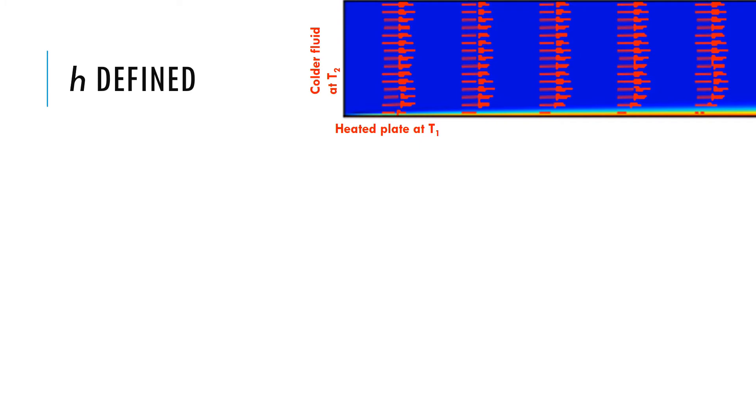So in this slide, we're going to define h. So as we have seen in the past, if we have a heated plate over which colder fluid flows, the solution is going to look like this.